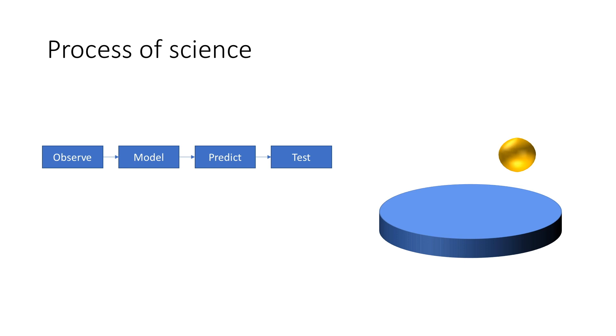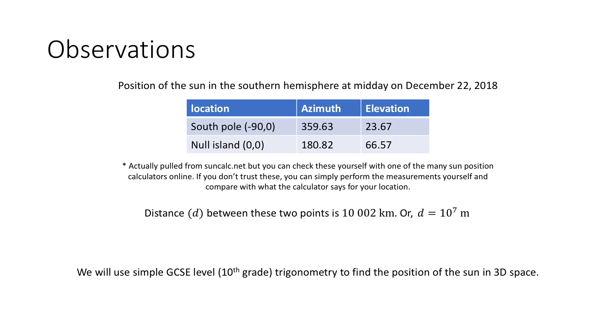So we will start with the position of the sun as seen from two locations on the same line of longitude and at the same time, and we will use this information to calculate the position of the sun in three-dimensional space. We have the position of the sun at Null Island, which is the point where the equator intersects the line of zero longitude, and the south pole. Now these positions are chosen because it makes the maths a bit more simple, however we could use different positions but the maths will become a little bit more complicated and it will still hold up.